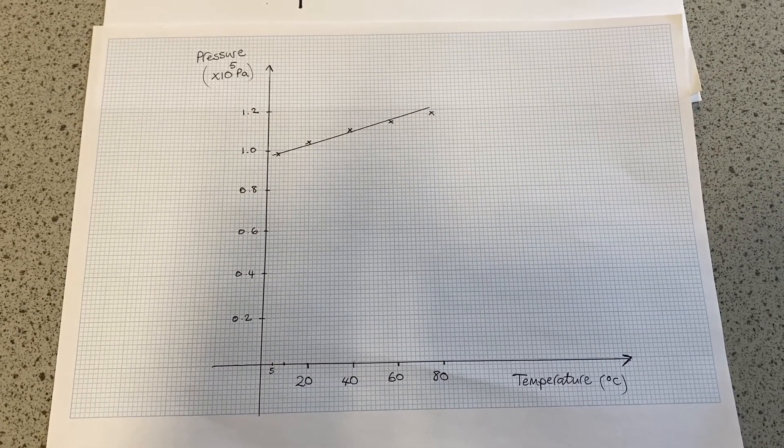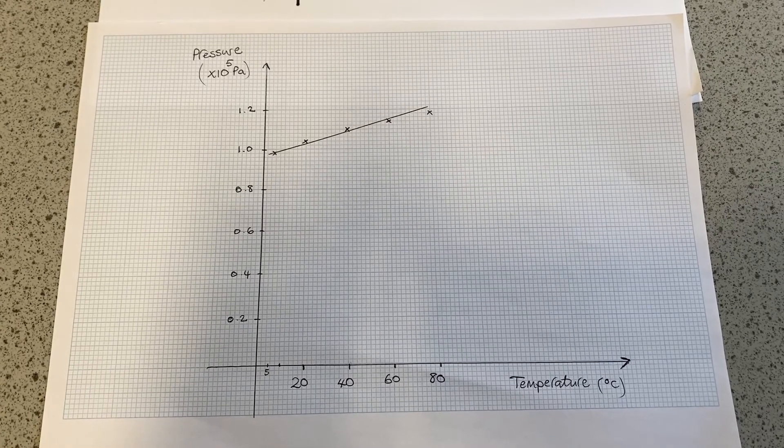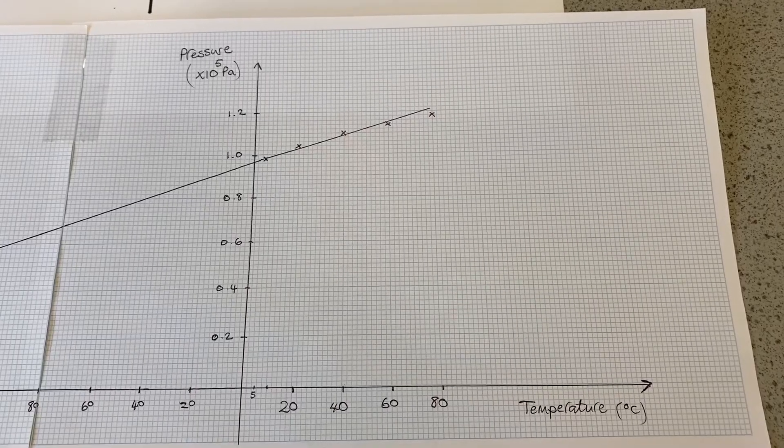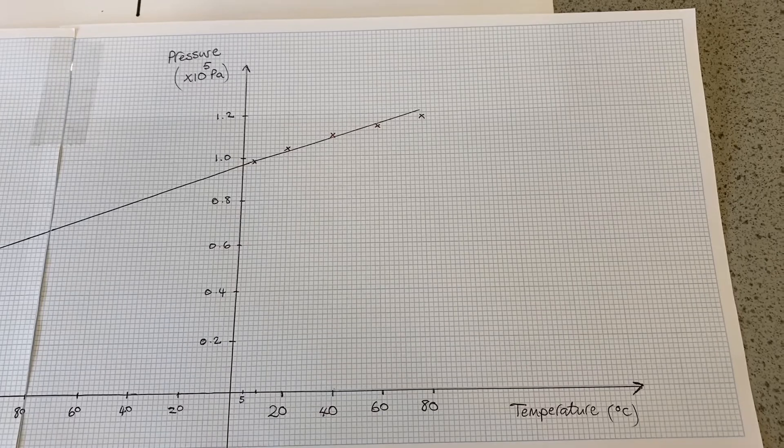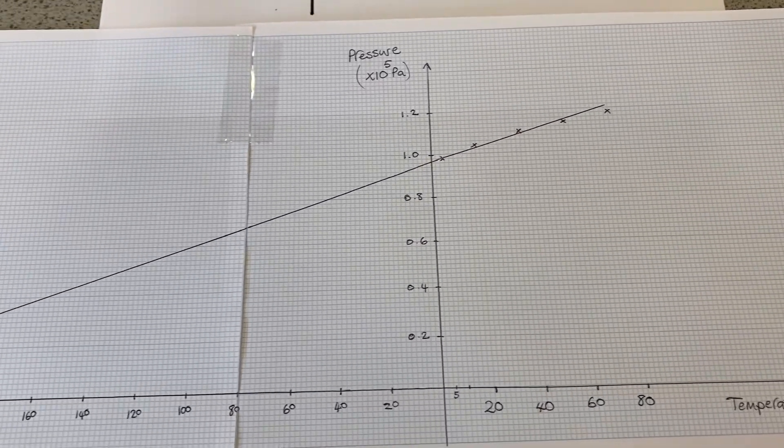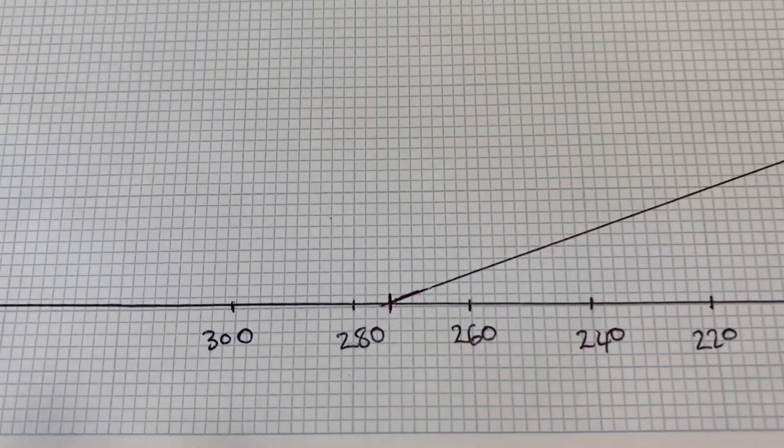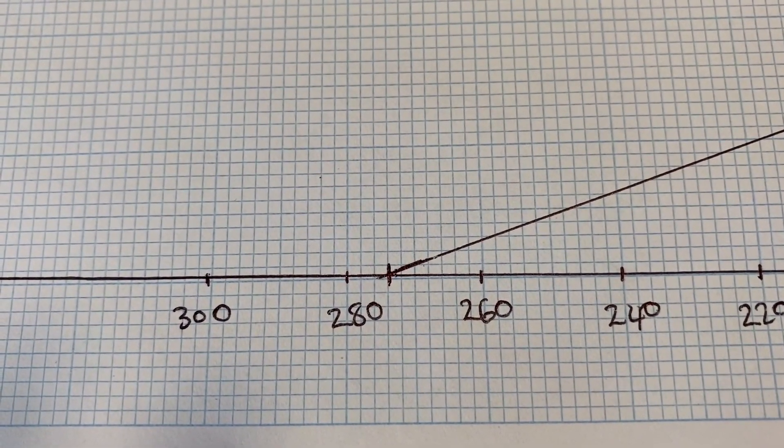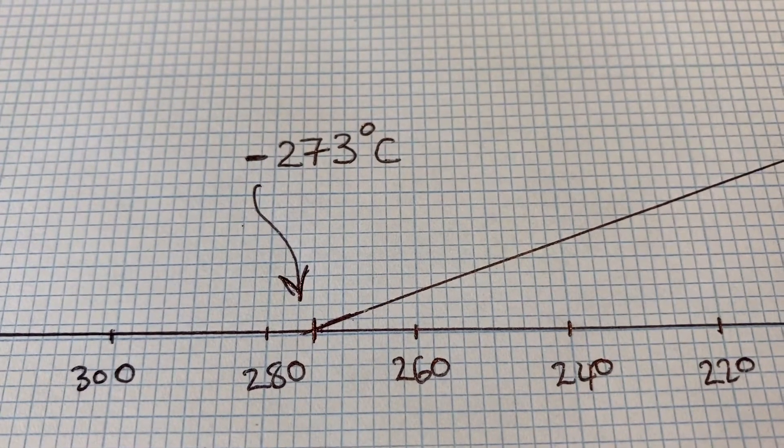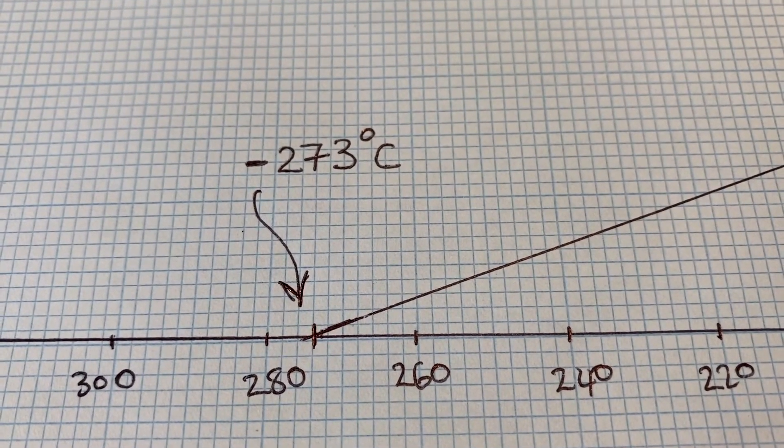But that graph does not go through the origin, nowhere near it. If we extend that graph backwards though, there must be a point where it cuts the x-axis, so there must be a temperature where the pressure reaches zero. That temperature is minus 273 degrees C.